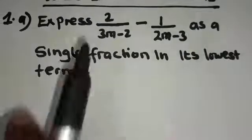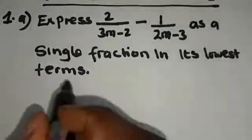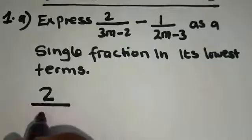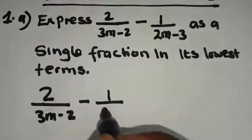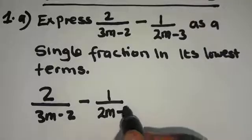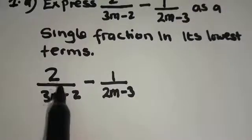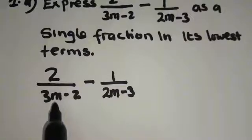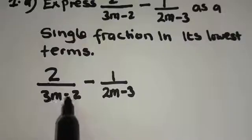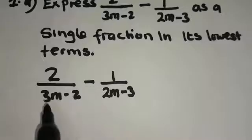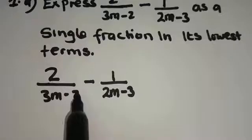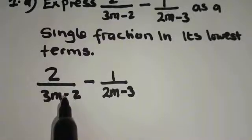First of all, let's rewrite this expression. We have 2 over (3m minus 2) minus 1 over (2m minus 3). They want us to express these two fractions as a single fraction. When you look at these two fractions, the first fraction is subtracting the second fraction.